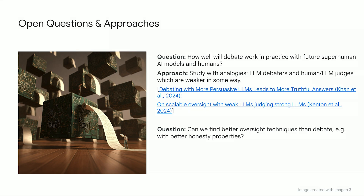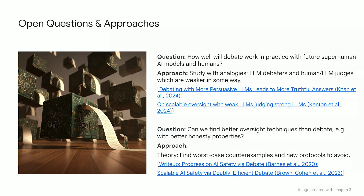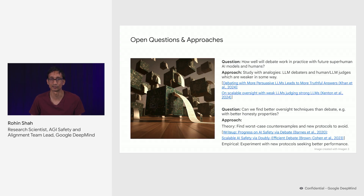Another open question: can we find better oversight techniques than debate? For example, with better honesty properties? A couple of approaches here. One is to do work in theory — this kind of work looks like finding worst-case counterexamples and then suggesting new protocols or games to avoid these counterexamples. Here's a couple of references on that. A more empirical approach is to experiment with new protocols, either those suggested by theories or ones that we might think work well in practice, and then just seek out better performance. This is similar to the approach with analogies discussed first.